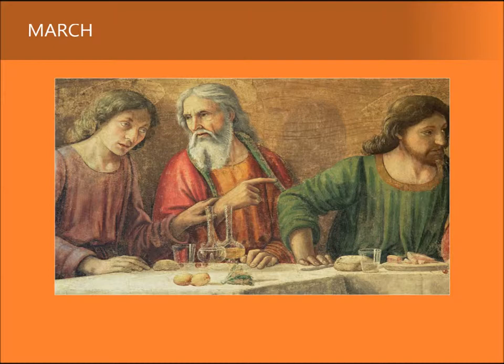In Florence, a tradition developed where religious communities of women and men commissioned artists to locate the scene of The Last Supper on the refectory wall. Ghirlandaio's The Last Supper, painted for the refectory of the Monastery of the Ognissanti, situates the scene in a room where we must imagine the table stretching across the dining space. At the short ends of the table, as we see in this detail, a single figure closes the composition.